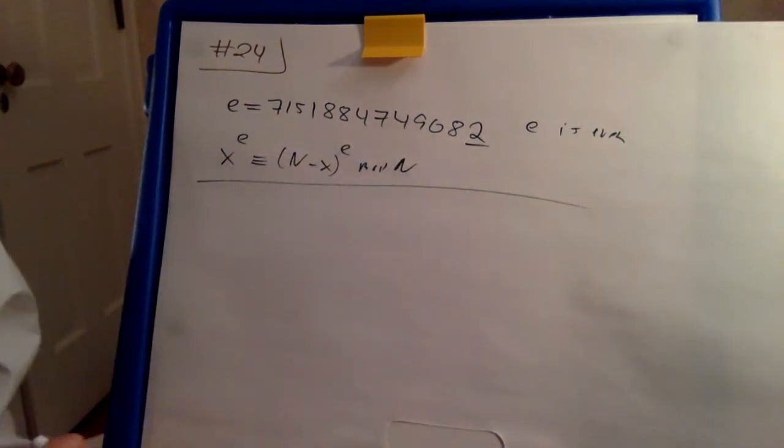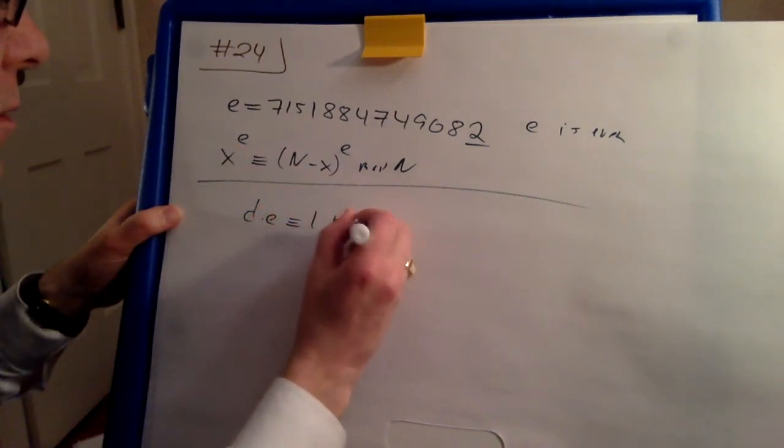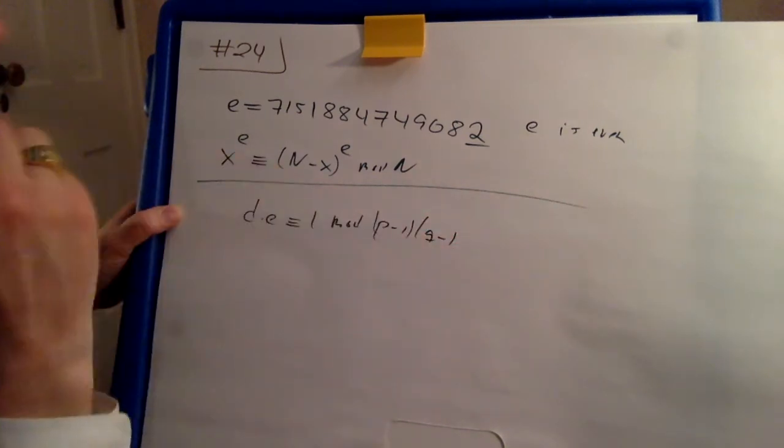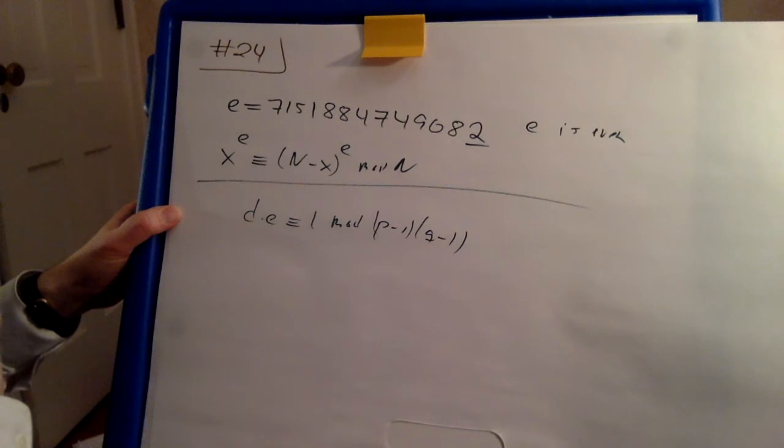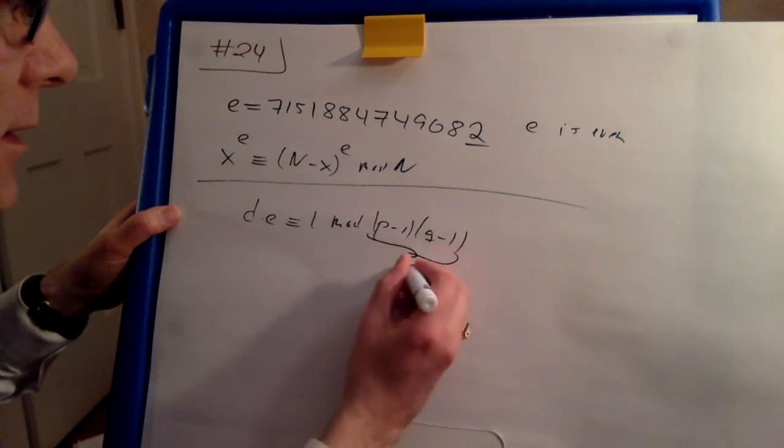Alternatively, look at the equation d*e ≡ 1 mod (p-1)(q-1). Now p and q are two large primes, so they're both odd, which means (p-1)(q-1) is even.